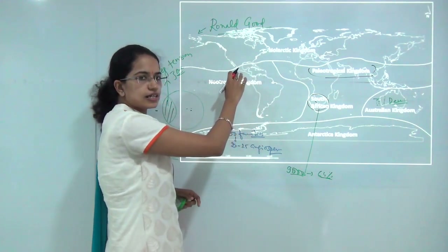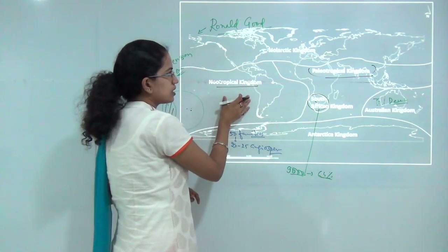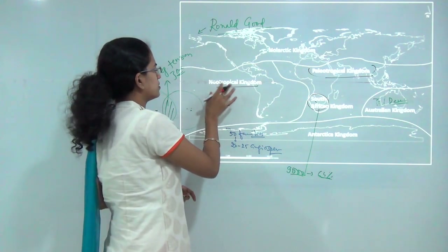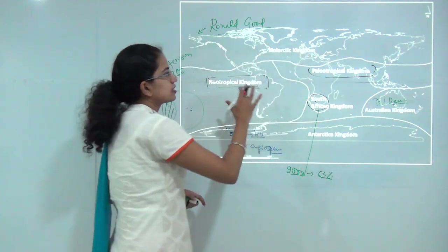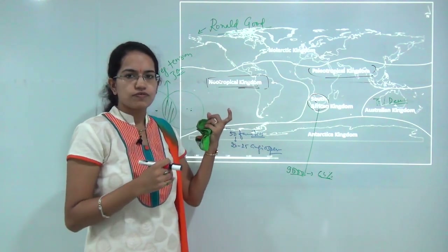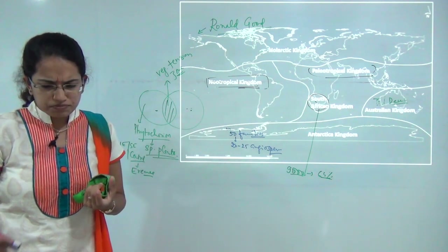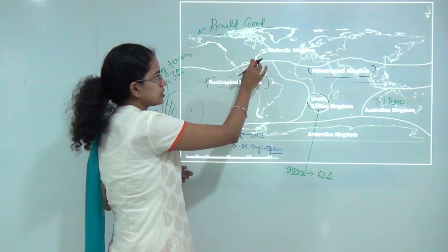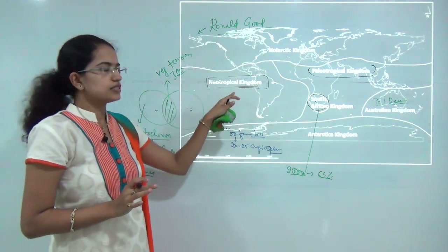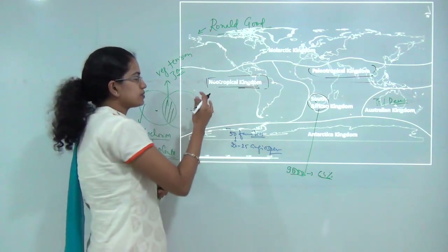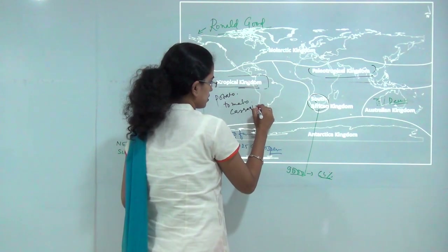The Neotropical region covers Central America, Mexico, and South America. This region, along with the Holarctic region, comprises some of the major floras of the globe. It excludes southern Florida and the Caribbean islands. Major crops common to this region include potato, tomato, cassava, sweet potato, and yam.